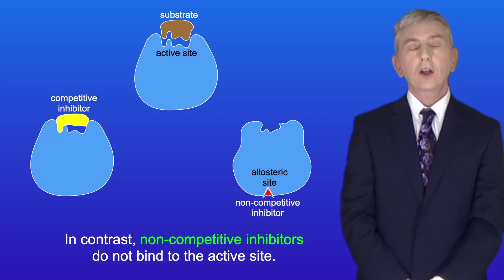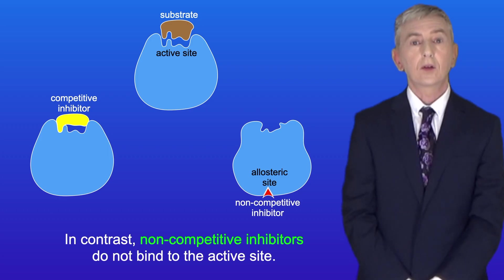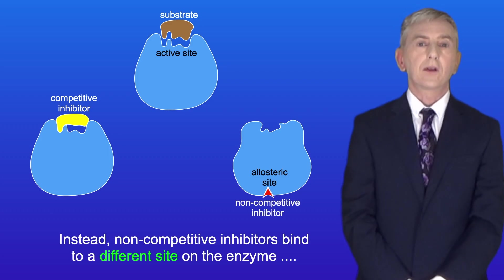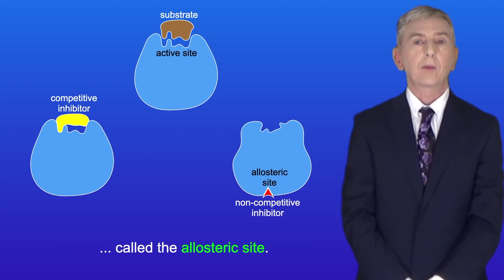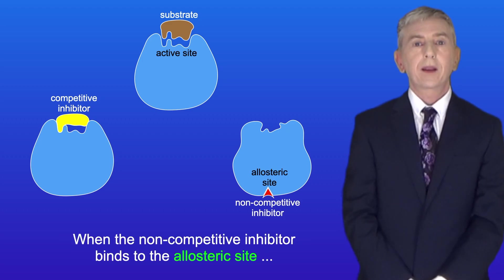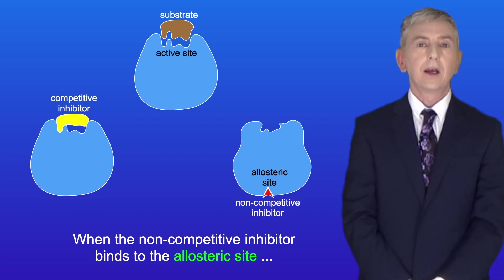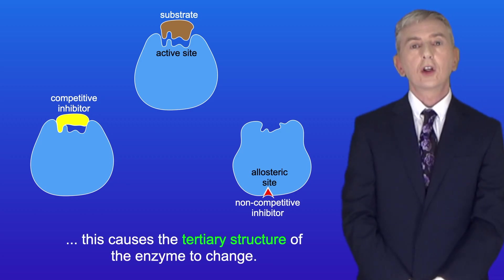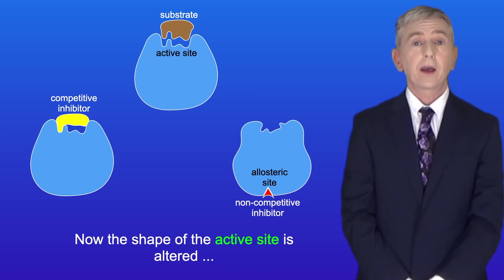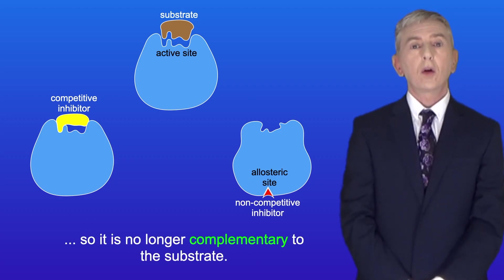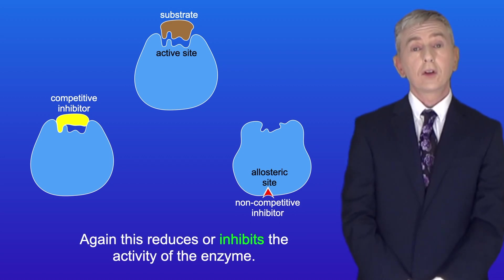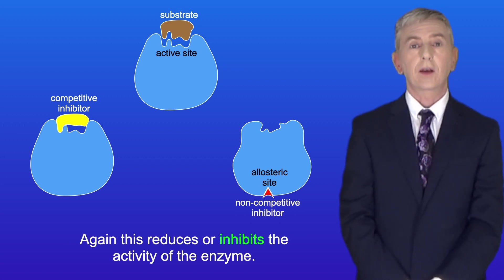In contrast, non-competitive inhibitors do not bind to the active site. Instead, non-competitive inhibitors bind to a different site on the enzyme called the allosteric site. When the non-competitive inhibitor binds to the allosteric site, this causes the tertiary structure of the enzyme to change. Now the shape of the active site is altered, so it's no longer complementary to the substrate, and this reduces or inhibits the activity of the enzyme.